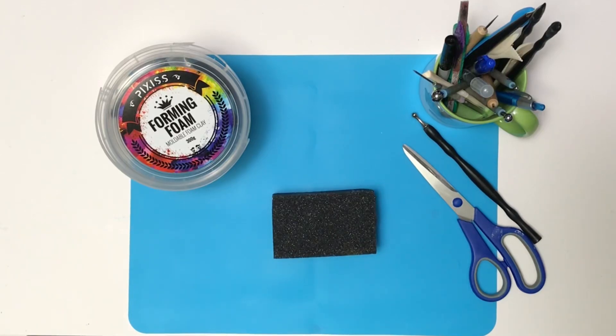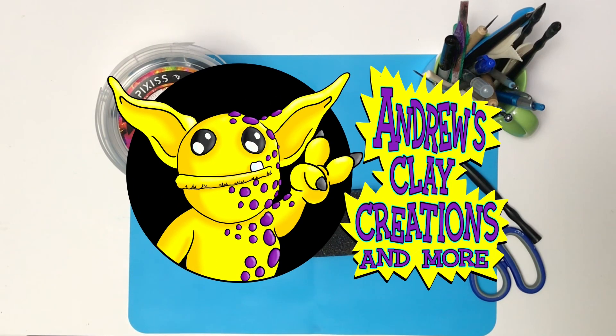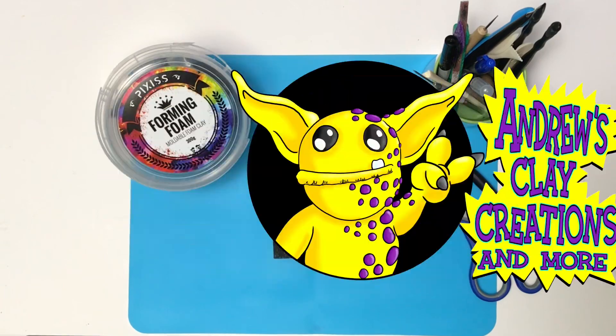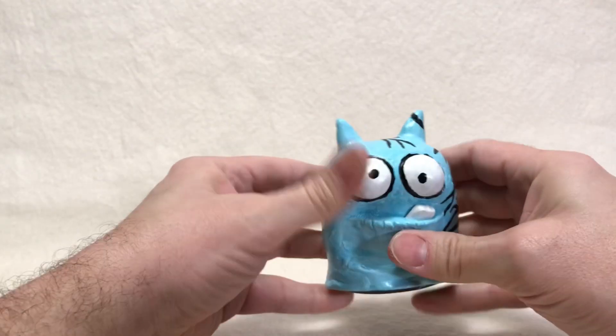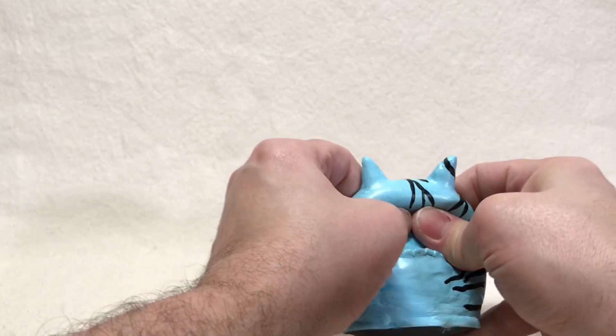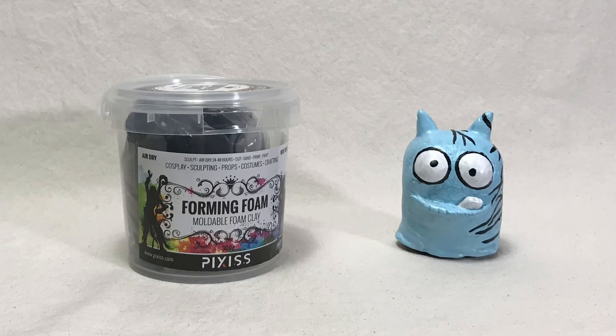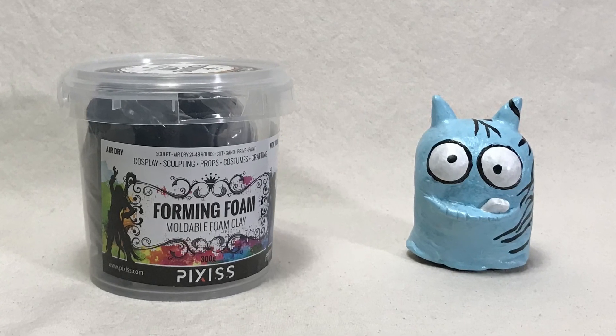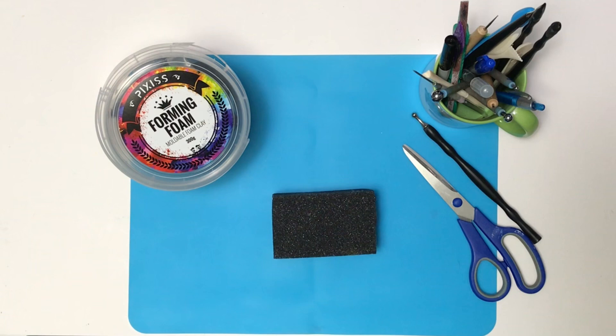Hello and welcome to today's video. In my last air dry clay video, I made a little squishy monster using Pixis's Forming Foam, moldable foam clay. It's an air dry clay and I had some issues with the paint on it and I wanted to try some different things.